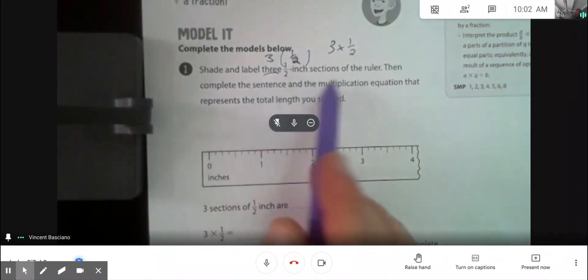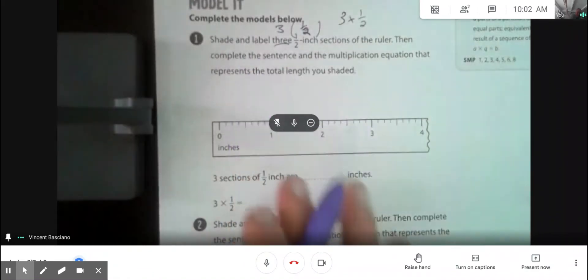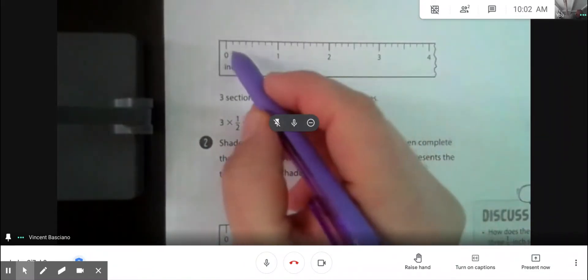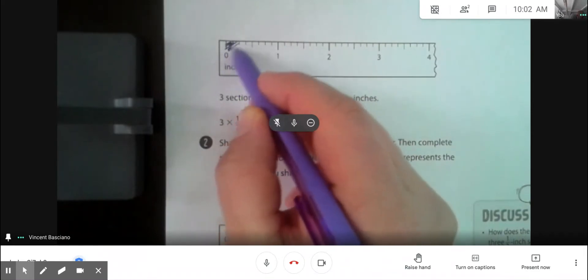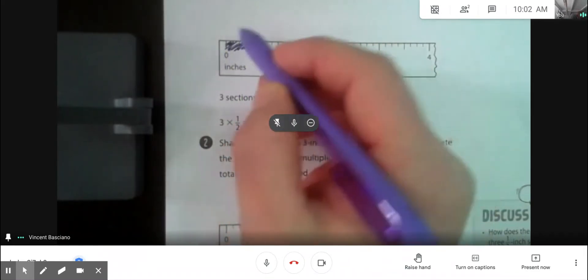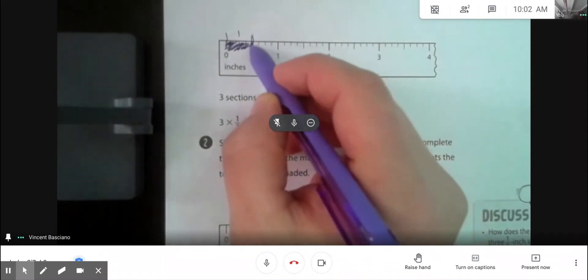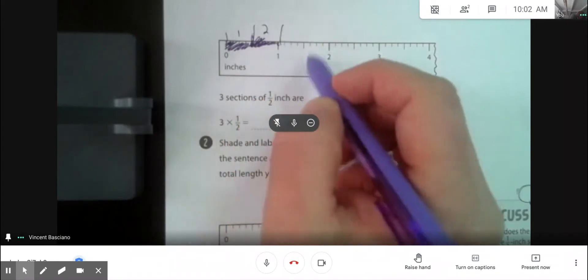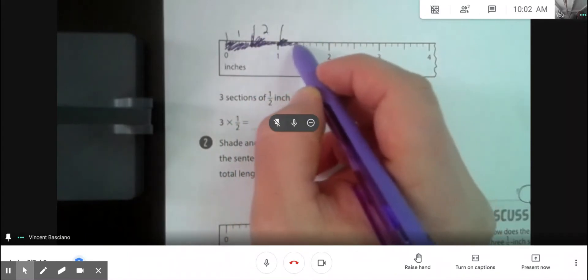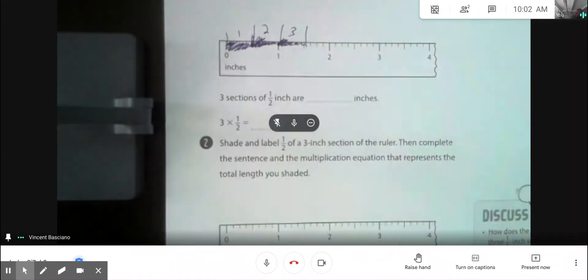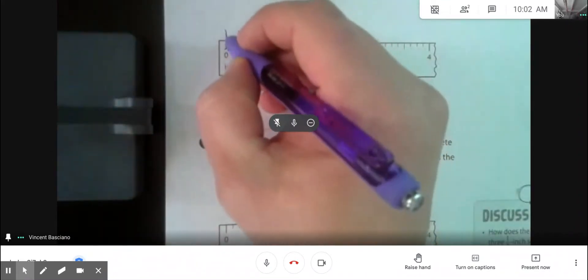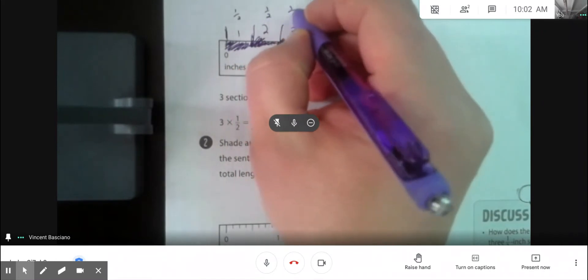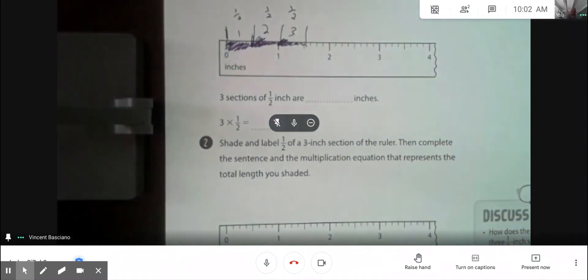So we'll shade and label three one-half sections. So let's do this like that. Here's one-half inch. That's the first one. One. Here's the second one-half inch. Two. And here's the third one-half inch. That's three one-half-inch sections. You can see that this is one-half, this is one-half, and this is one-half. Right there, all right?